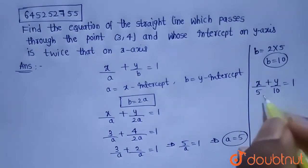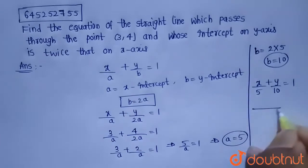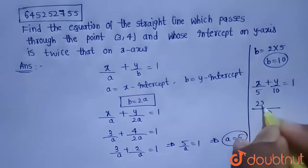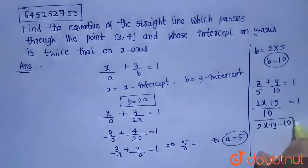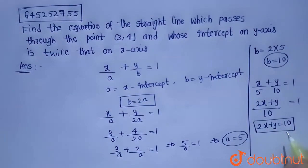Now, let me take out the LCM and LCM of 5 comma 10 is 10. So, 2x + y = 1. So, from this 2x + y = 10. So, the required equation of line is 2x + y = 10.